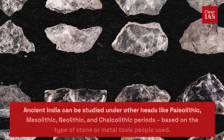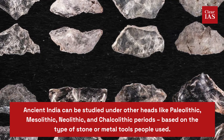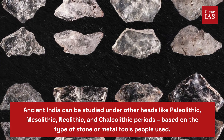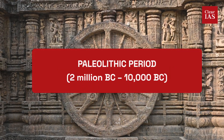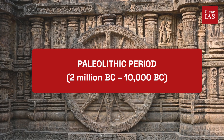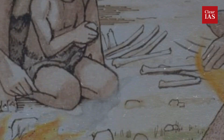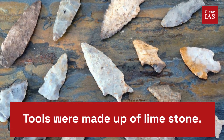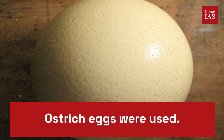Ancient India can be studied under other heads like Paleolithic, Mesolithic, Neolithic, and Chalcolithic periods, based on the type of stone or metal tools people used. The Paleolithic period spans from 2 million BC to 10,000 BC. Some important characteristics of this period were the use of fire, tools made of limestone, and the use of ostrich eggs.